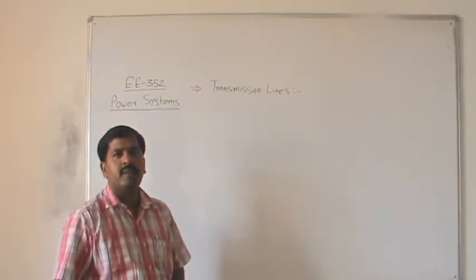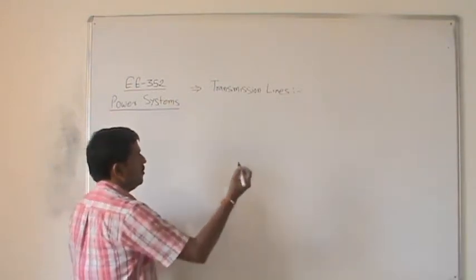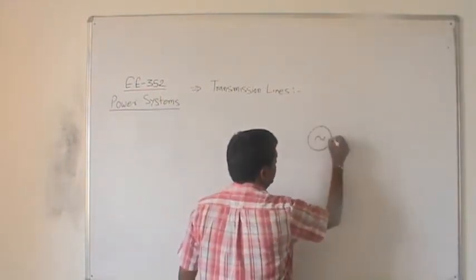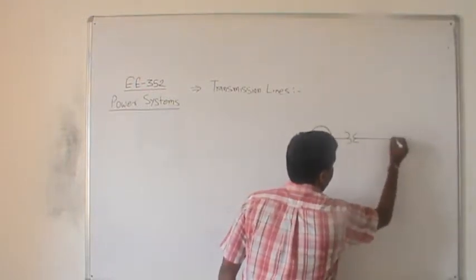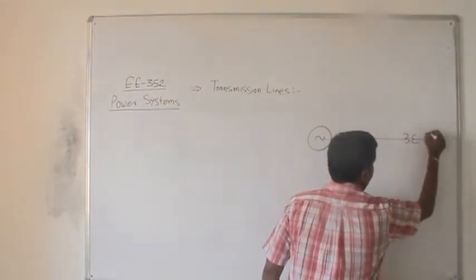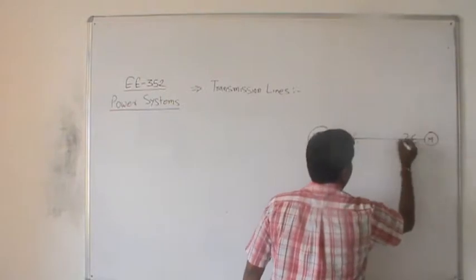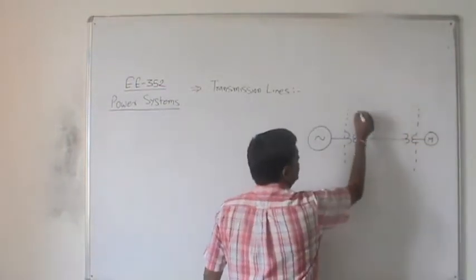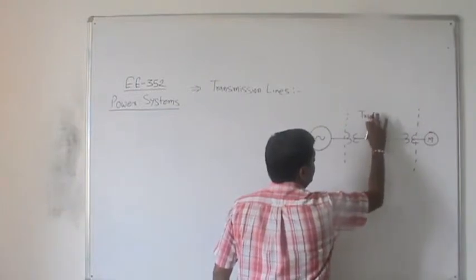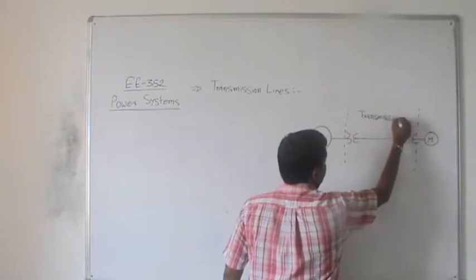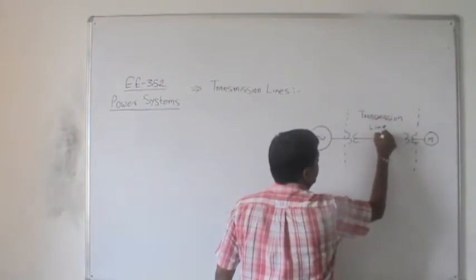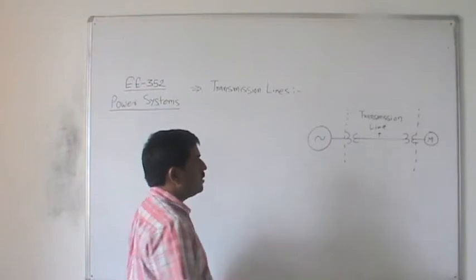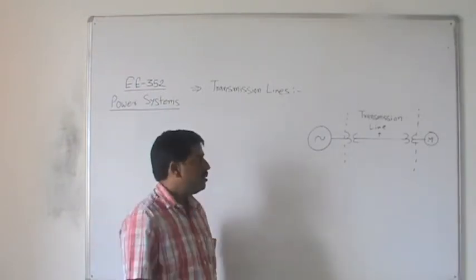As discussed in the previous lecture, the power system consists of generation, transmission, and distribution. This section is termed as the transmission line, and it is used for transferring power from the generating station to the load center.